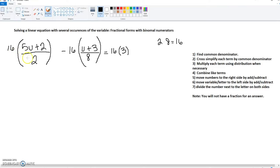Now we need to cross-simplify or cross-divide, if you will. 16 divided by 2 is 8. So now we've got 8 parentheses, 5u plus 2, because we're getting rid of that denominator. We're clearing the fraction.